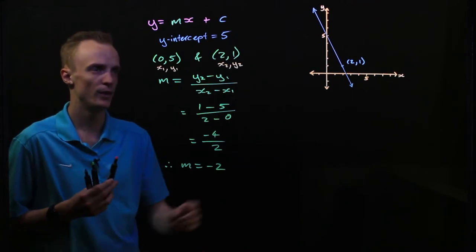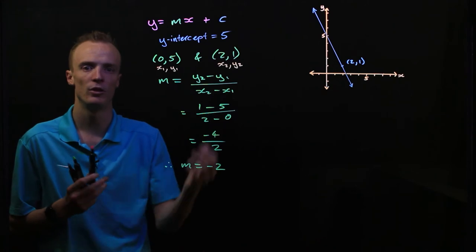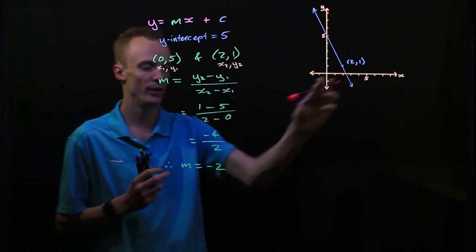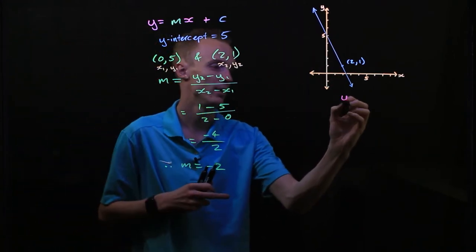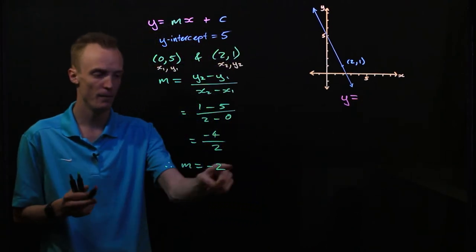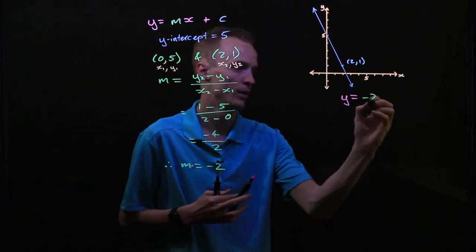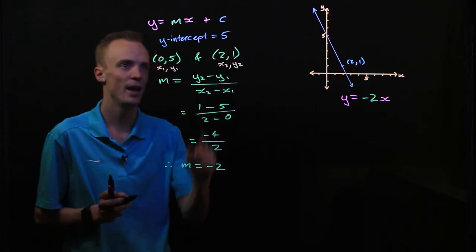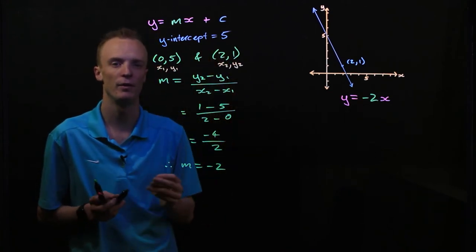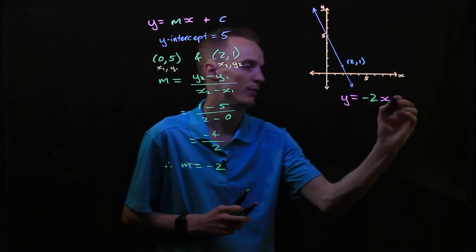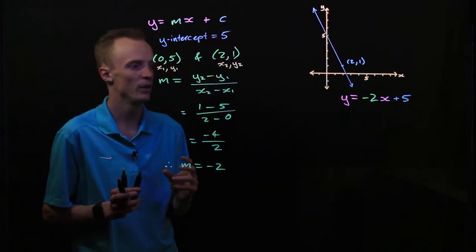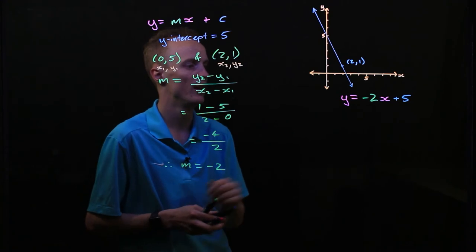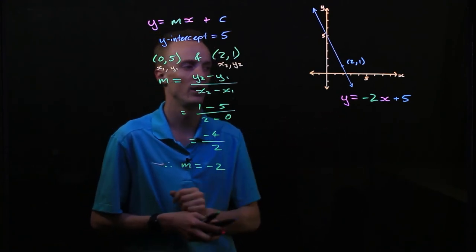I've now identified the two properties that I need to substitute back and represent the equation for this linear line. The equation for this linear line is going to be y equals our m value of negative 2 multiplied by my x. Then I'm going to be adding my y-intercept. Because my y-intercept is positive, I'm going to be adding 5. Now I've represented an equation for every coordinate that lies along this linear line, and that equation is y equals negative 2x plus 5.